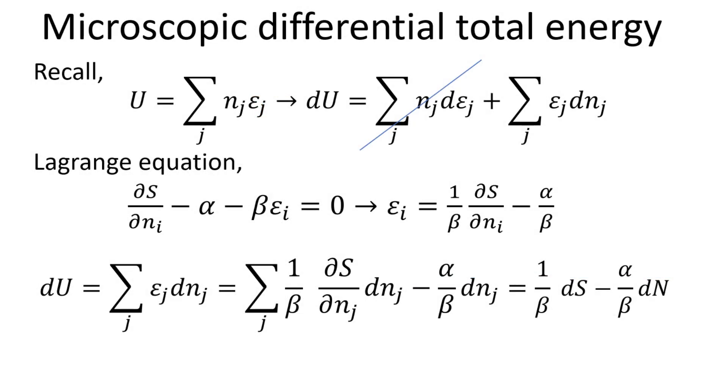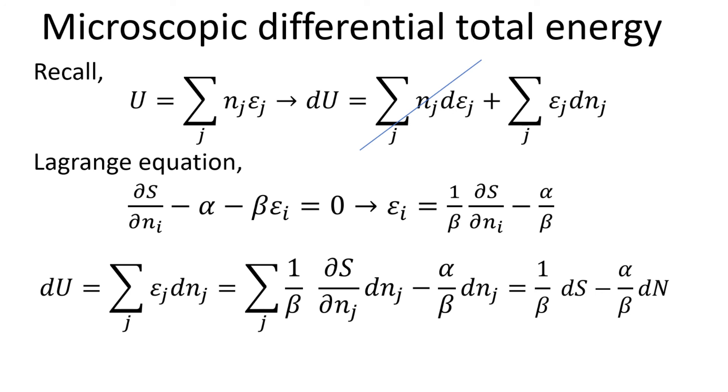The way to determine the constants alpha and beta is to compare our microscopic expression of the total energy with that of the thermodynamic law. We begin with our microscopic definition of the total energy of the system and express the total energy U in terms of its differential form. Since we are only interested in the variation of N, we can eliminate the first term. We also recall our Lagrange multiplier equation, and obtain an expression for the energy level. Substituting this into the differential of U expression, we obtained a new expression for the differential U in terms of the differential of entropy S and total particles number N.